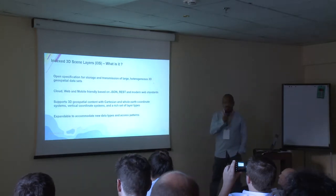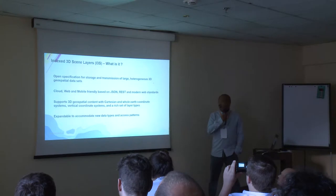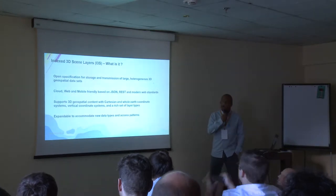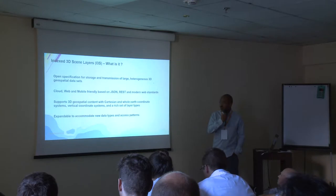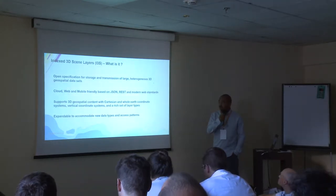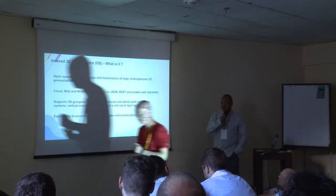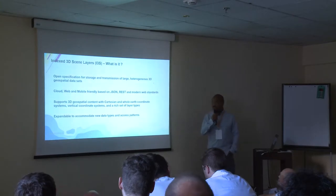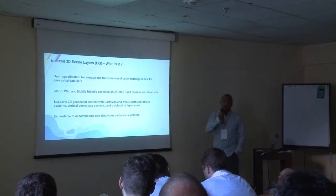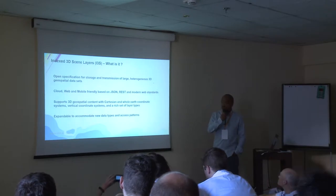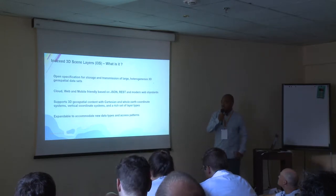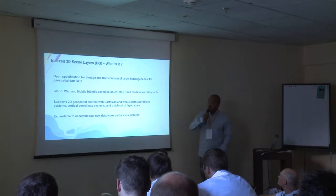Coordinate systems are very key for geospatial systems, and i3s supports both Cartesian and geodetic coordinate systems, as well as vertical coordinate systems. You might have seen some datasets that have been offset by 30 meters, especially in Europe, because some applications don't consider vertical coordinate systems. So i3s from the get-go considered both horizontal as well as vertical coordinate systems, and specified in the standard what it supports for ease of use.